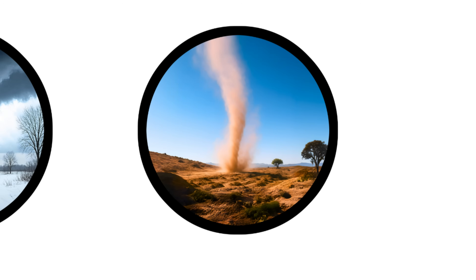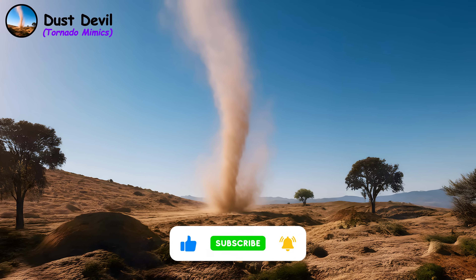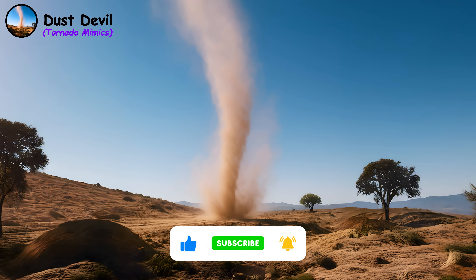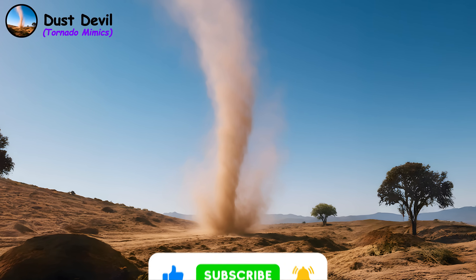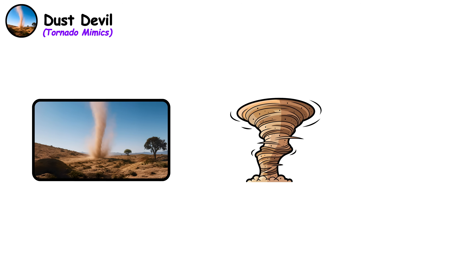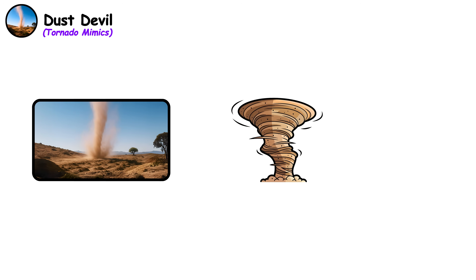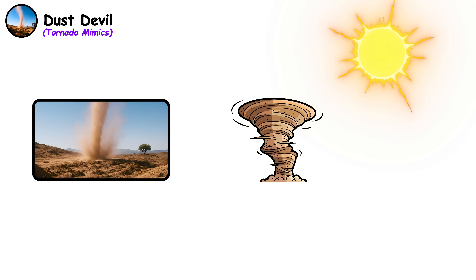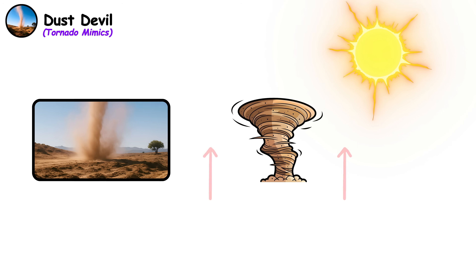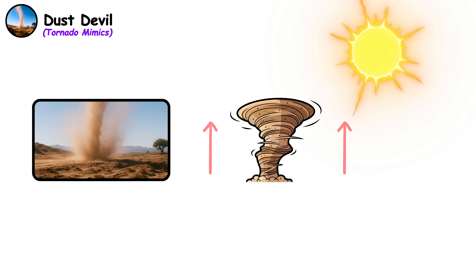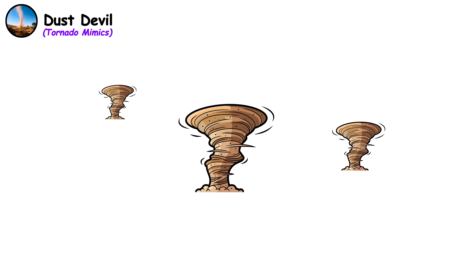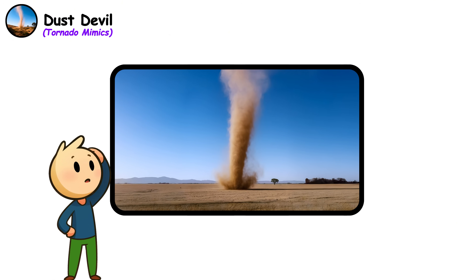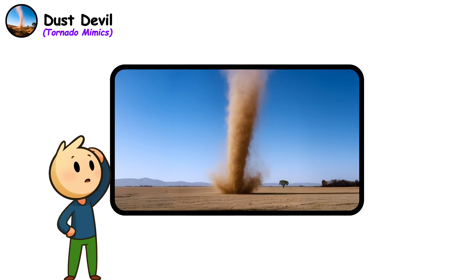Dust devil. Dust devils look like miniature tornadoes but form through completely different mechanisms. These spinning columns of dust and debris develop on hot days when intense surface heating creates rising air that begins rotating. Most dust devils are harmless — they last only a few minutes and cause no damage beyond kicking up dust. When you see one, just don't do what some people attempt.